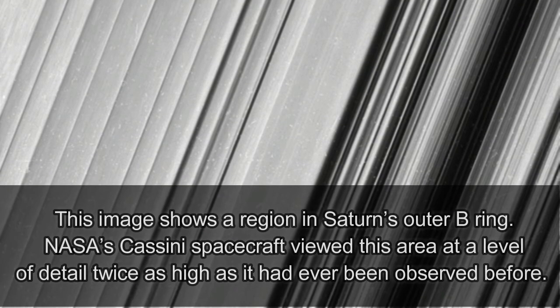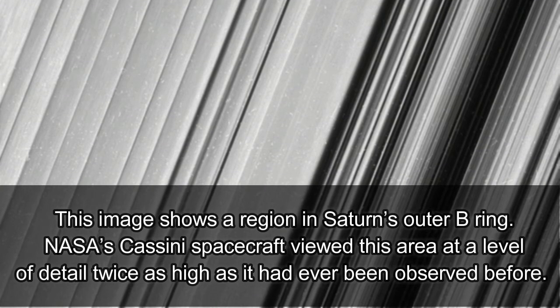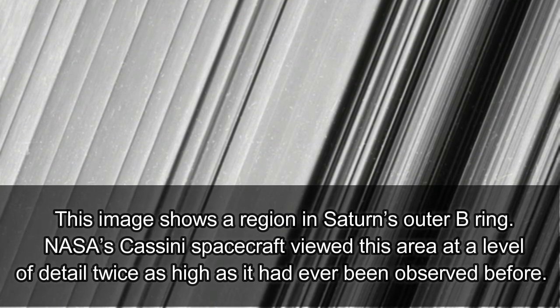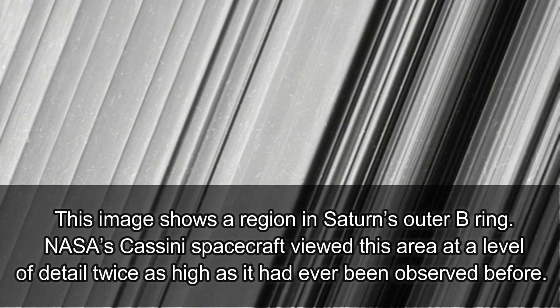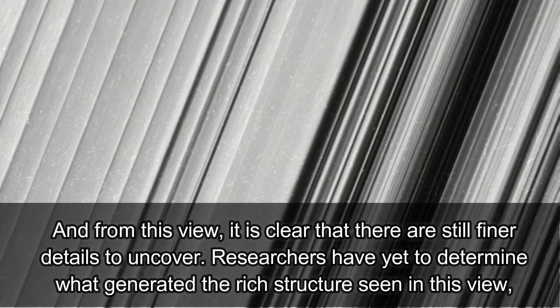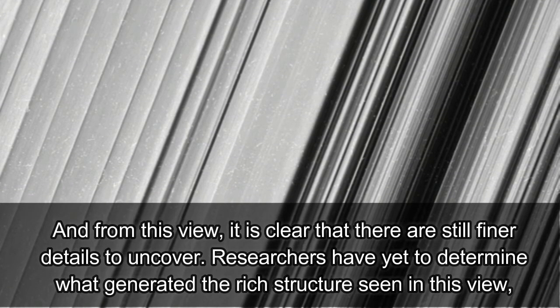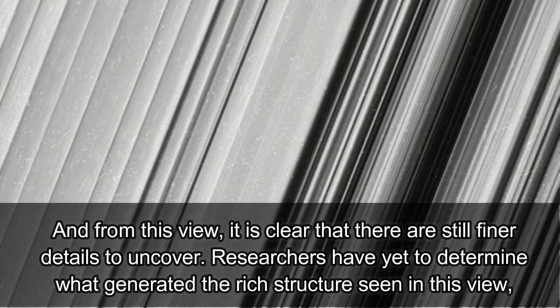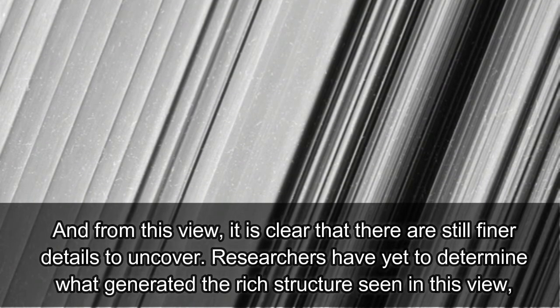Elsewhere in the B ring, Saturn's largest and brightest ring, yet still estimated at just 10 meters thick, Cassini's camera showed countless discontinuous stripes appearing like the strands of a harp at twice the level of detail previously available. Researchers have yet to determine what generated the rich structure seen in this view, but they hope detailed images like this will help them unravel the mystery, NASA wrote in a caption accompanying the image release.